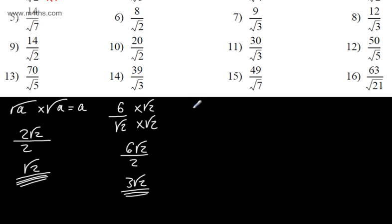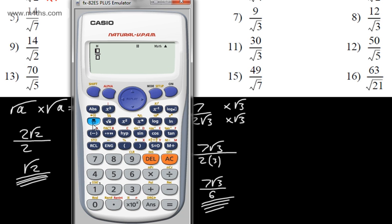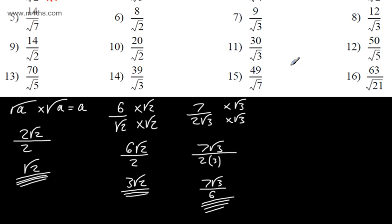Let's look at a slightly more challenging one: 7 over 2 root 3. With this one, I only need to multiply the numerator and denominator by the surd value — root 3 — not by the 2. So we get 7 root 3 in the numerator, and 2 multiplied by 3 in the denominator, giving us 7 root 3 over 6. We can't simplify that further. A calculator confirms: 7 over 2 root 3 rationalizes to 7 root 3 over 6.